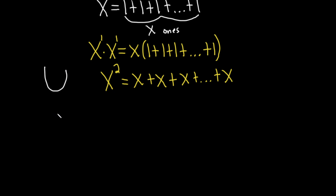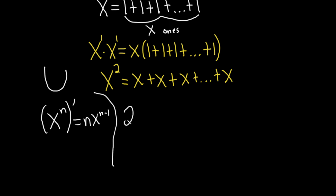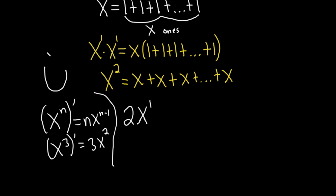In calculus, if you have x to the n and you take the derivative — that's what the prime symbol means — you bring down this number and put it in the front, then subtract 1, giving x to the n minus 1. So in our example with x squared, you bring down the 2, and 2 minus 1 is 1, so the derivative of x squared is 2x to the first. This is called the power rule of differentiation in calculus, usually learned in Calc 1. If it were x cubed, you'd bring down the 3 and get 3x squared.